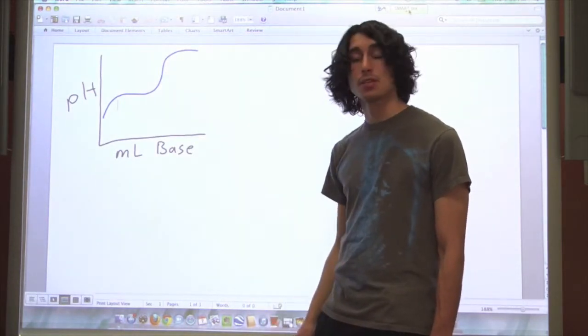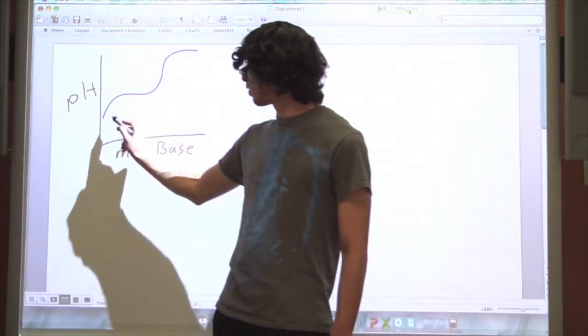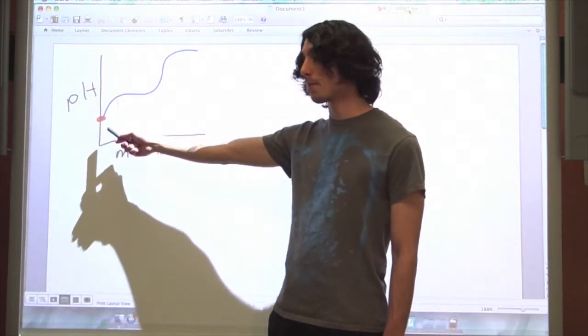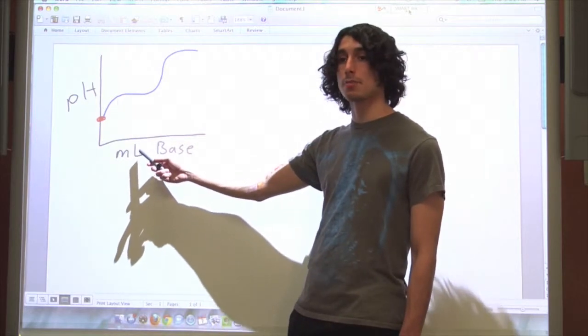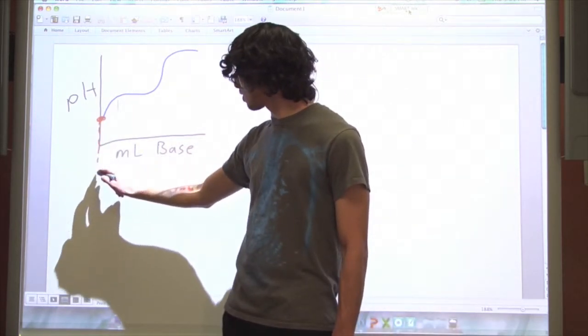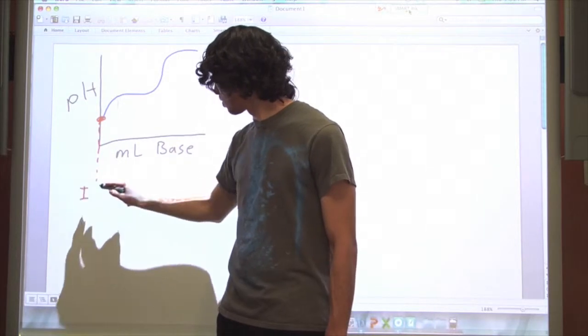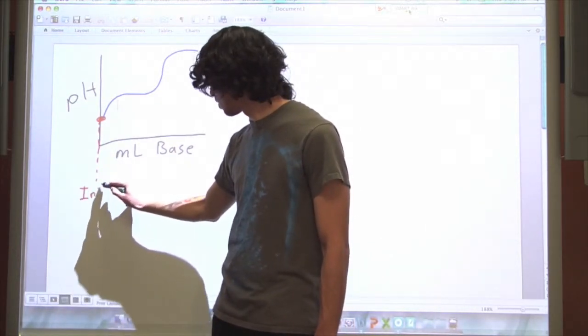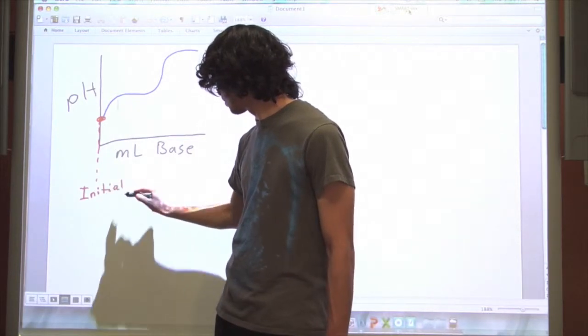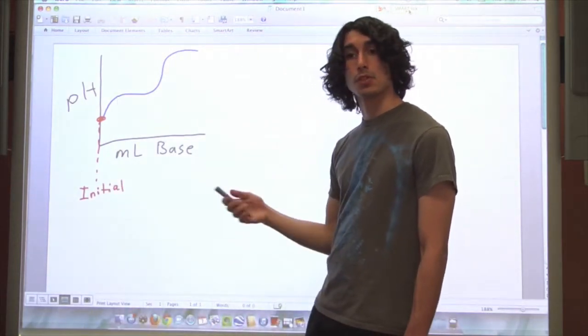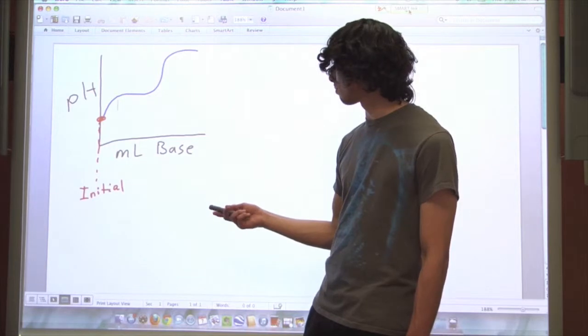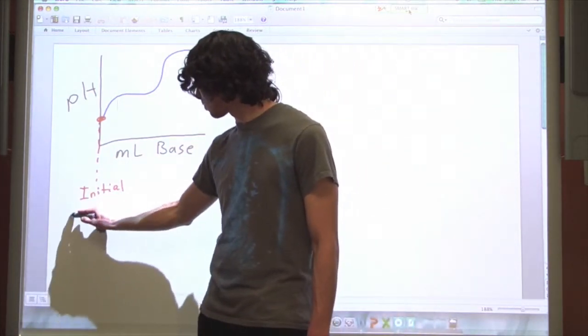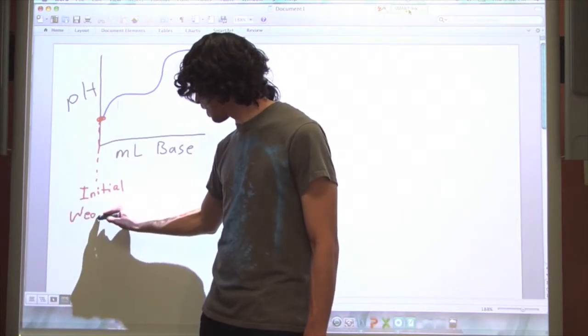There are a couple points that are important on this curve. The first one is where we start. So here is the initial point where no base has been added. At the initial point all you have is a weak acid, because we started with acetic acid.